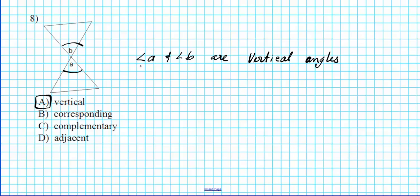And the last one — problem number eight: vertical angles. Vertical angles are always congruent, so the measure of angle A is equal to the measure of angle B. By naming the relationship between the pair of angles provided, you can automatically arrive at an equation or conclusion based on that given information.